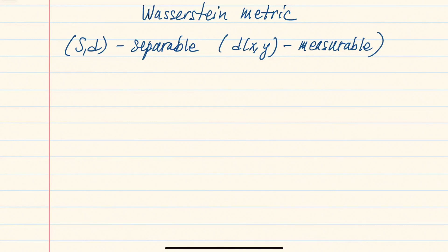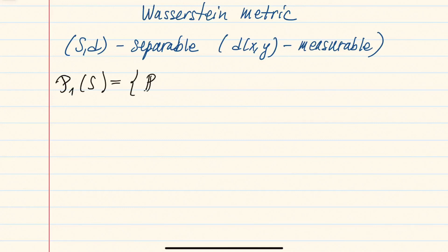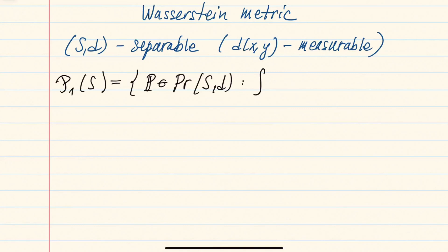This metric that we are going to define will not be defined on all probability measures, but on the following subset of probability measures, which we will denote by the calligraphic P1 of S. These will be all probability measures on our space — by default we always consider the Borel sigma-algebra — but here we will have the assumption that the integral of the distance from any given point x0 with respect to these probability measures will be finite.